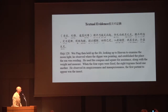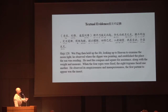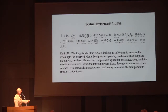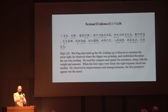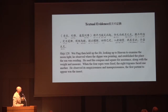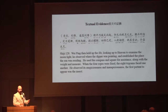Two classical case studies. First: an emperor had a dream in the middle of the night and summoned the court astronomer Wei Ping to interpret it. Wei Ping held up the Shri Pan — looking up to heaven to examine the moonlight, he observed where the dipper was pointing and established where the sun was residing. He used the compass and square for assistance along with the weight and measure — he set the Shurpan up, aligned it correctly and leveled it. When the four wraps were fixed and the eight trigrams faced one another, he observed its auspiciousness and inauspiciousness, and the first portent to appear was the insect.